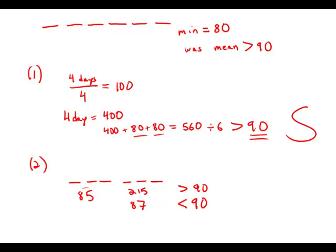So just knowing the lowest three days, we have no way to make any conclusion about whether the average for all six days is going to be over 90 or not. So this statement is insufficient.